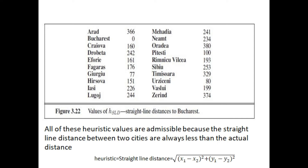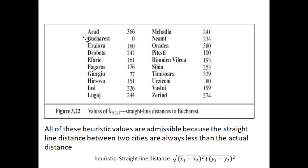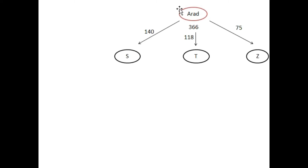Looking at the next slide, we write the initial state here. We consider this initial state as a root node, and the heuristic value of this root node is 366, as written in the table. Node A has a heuristic value of 366. I write the value here, then I will explore this node, marking it in red to represent a visited node.